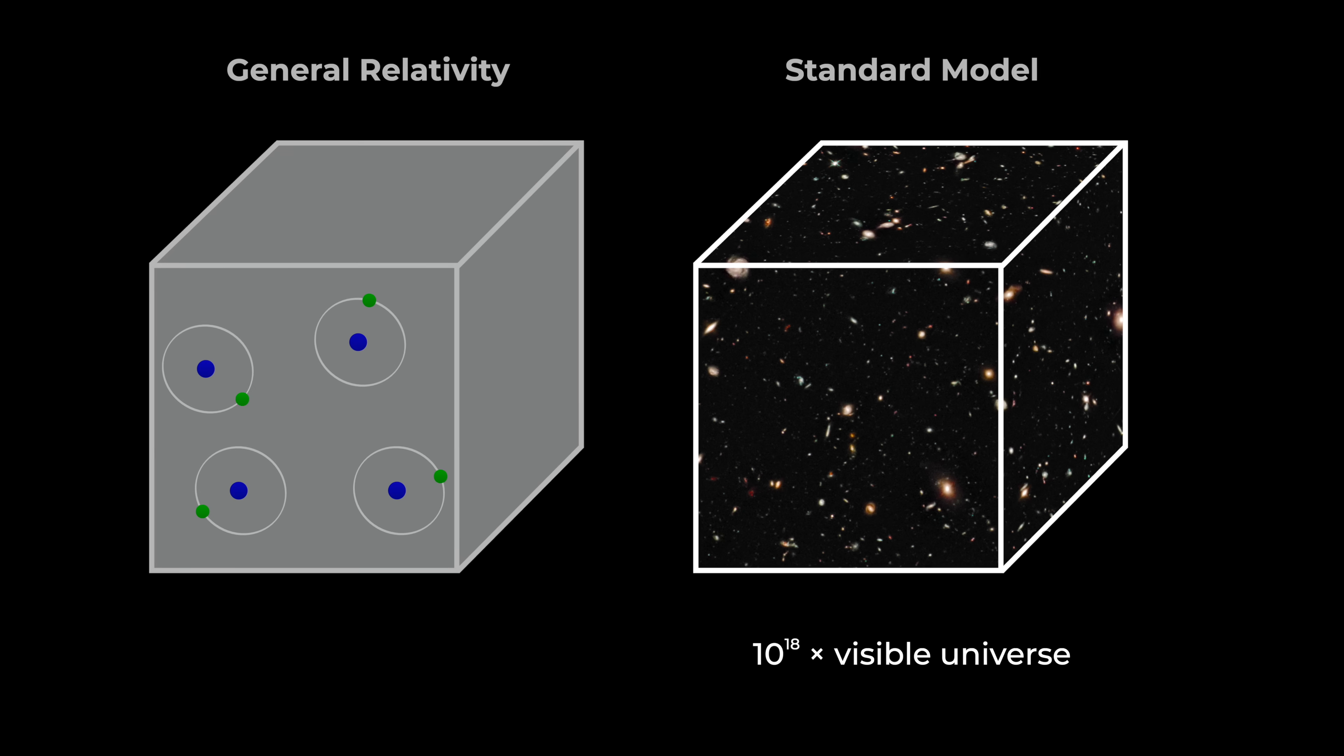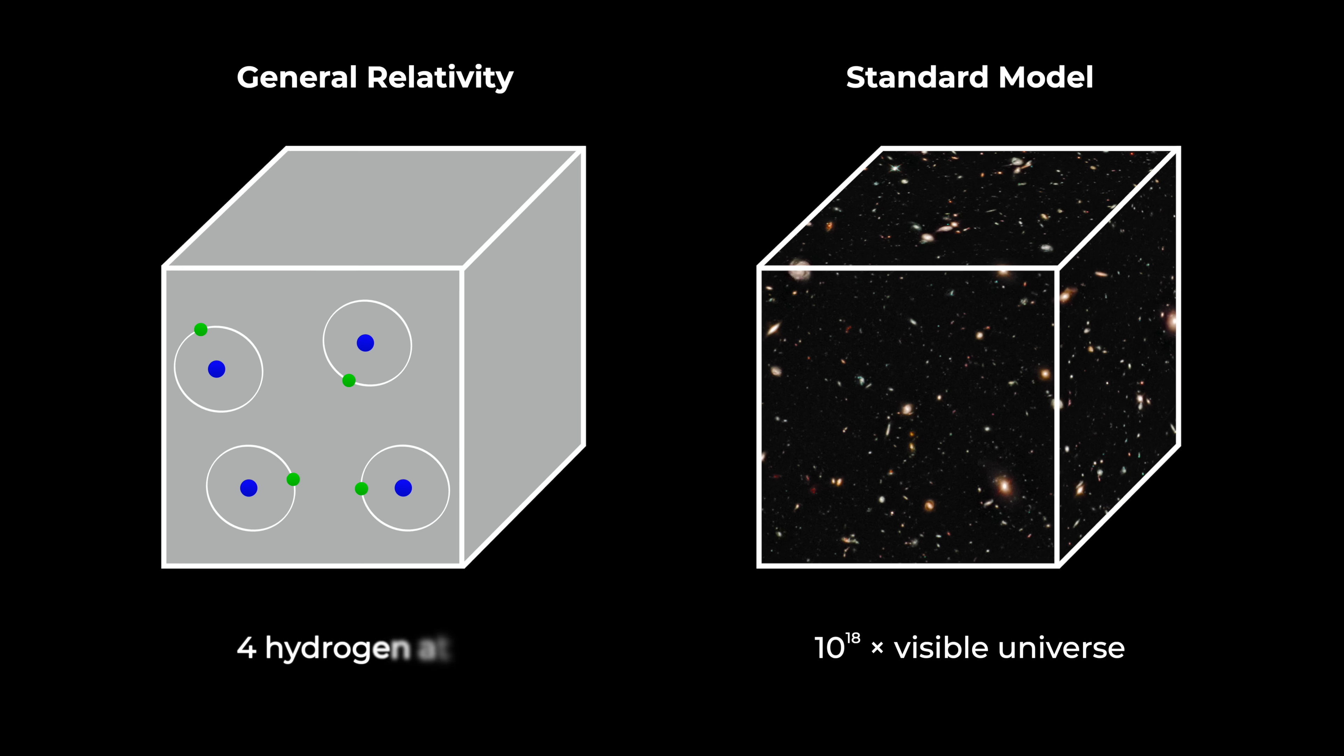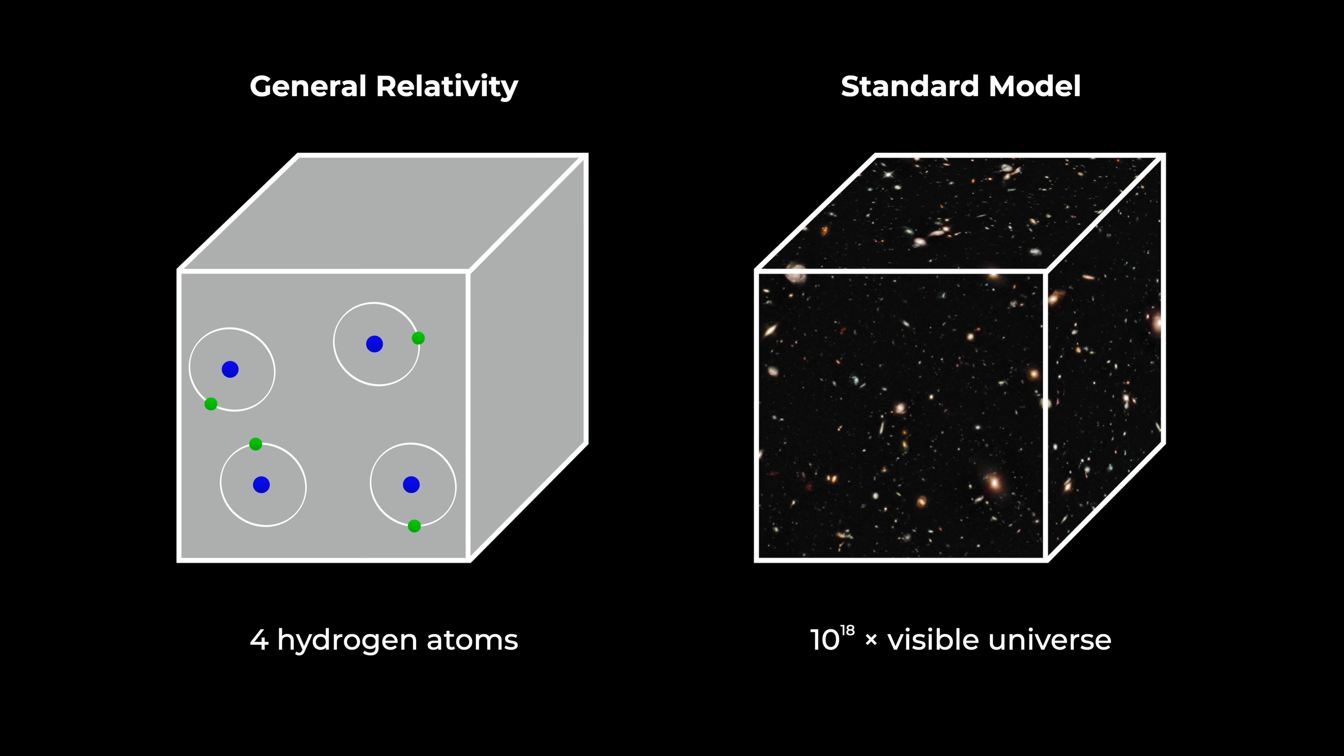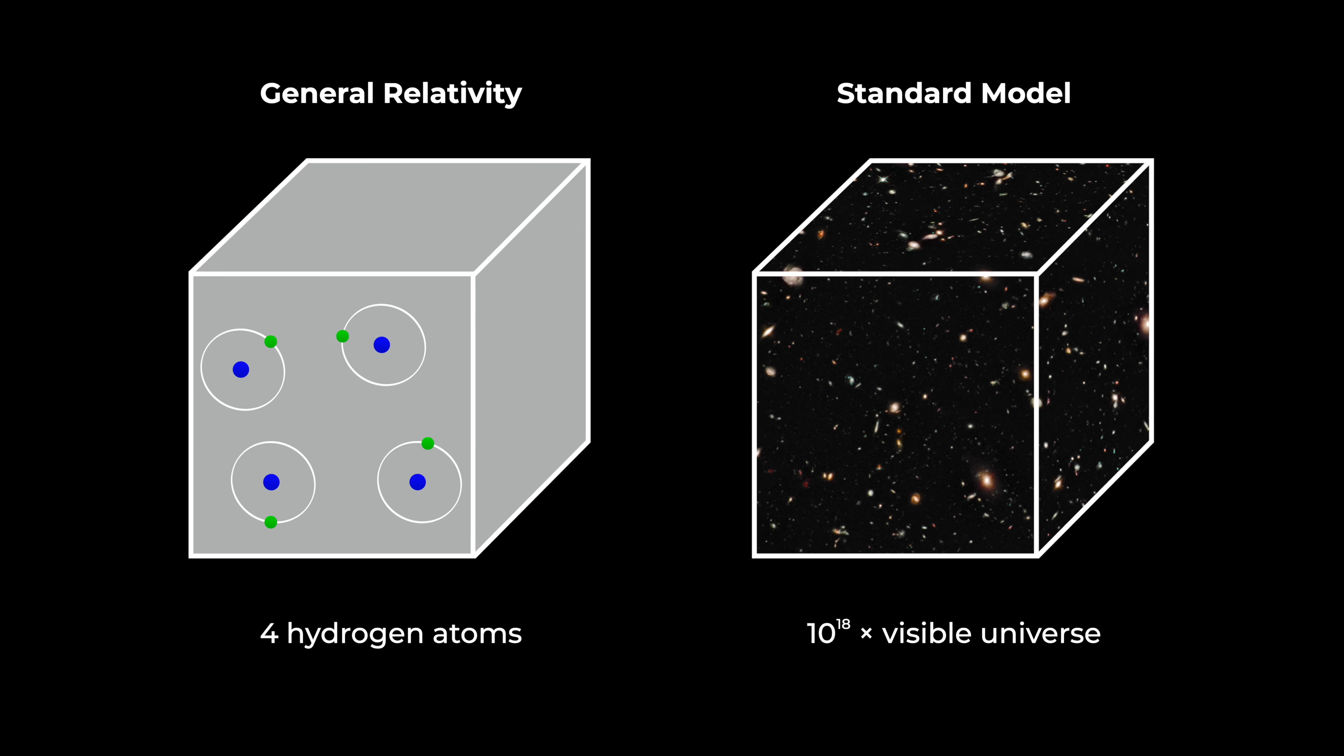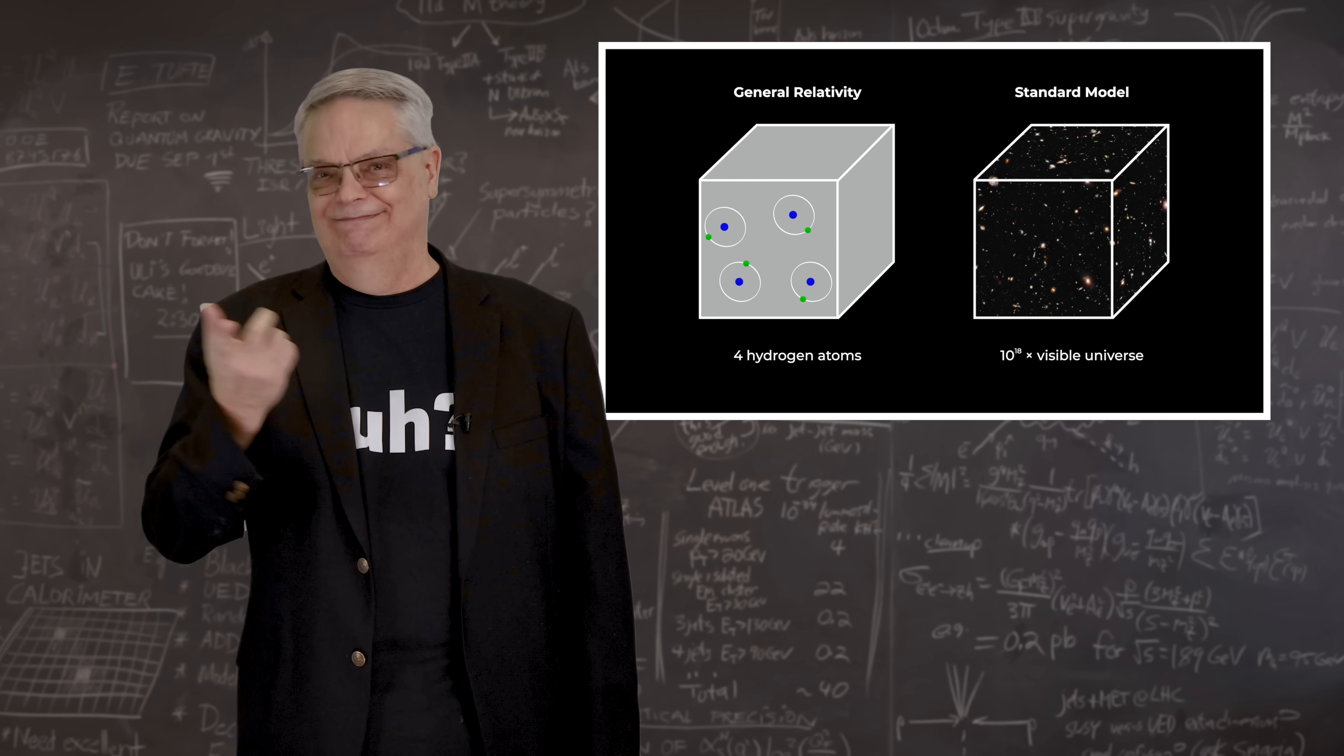On the general relativity side, the energy of empty space is equivalent to four hydrogen atoms per cubic meter of space, while on the standard model side, it's equivalent to the mass of a hundred quintillion universes in the same volume. And that, as any precocious toddler would say, that's a lot.